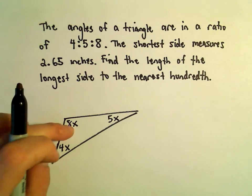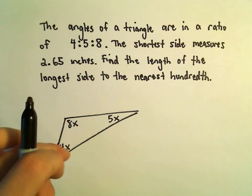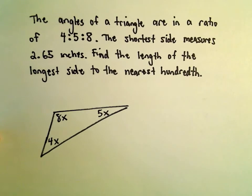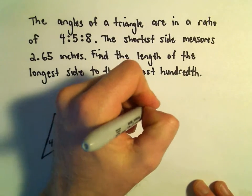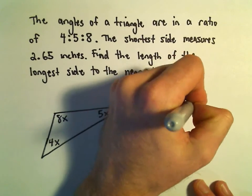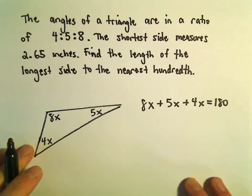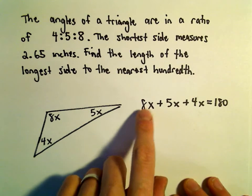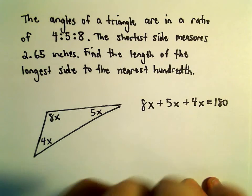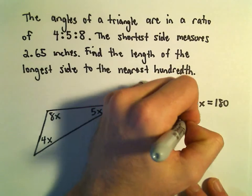Again, if you think about the ratio, we don't know what x equals yet, but if we take the ratio of the angles to each other, those would be in a ratio of 4 to 5 to 8. Okay, well now we know that if we add the angles together, so 8x plus 5x plus 4x, that has to equal 180 degrees. Well, let's see, 8 plus 5, that's 13. 13 plus 4, that's going to give us 17x equals 180.